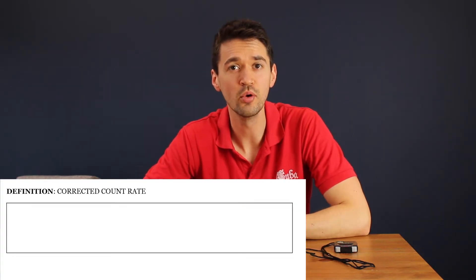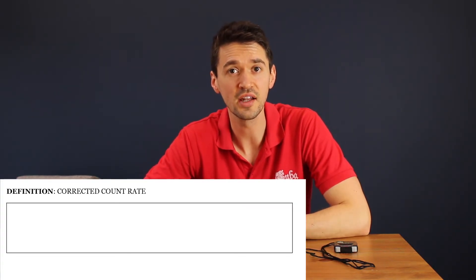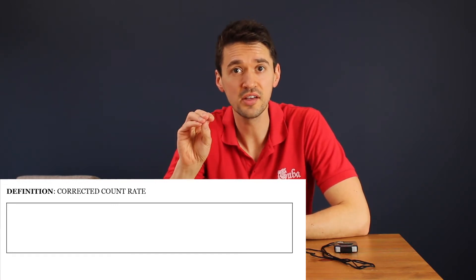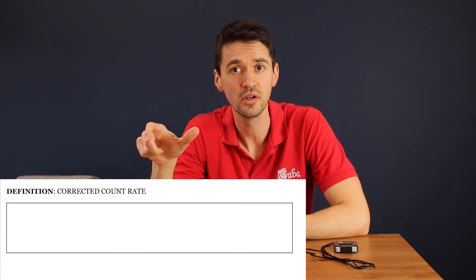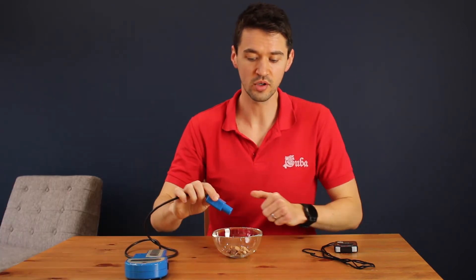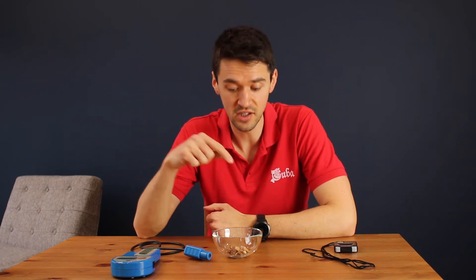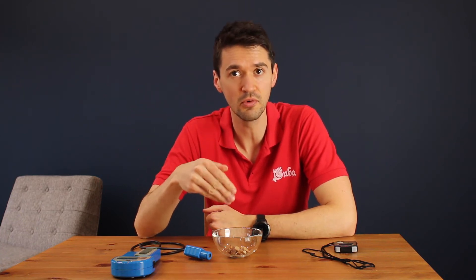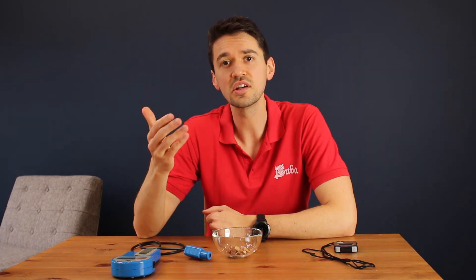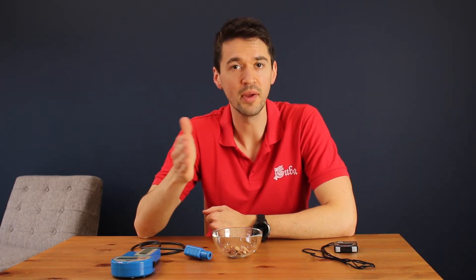The corrected count rate is an important thing you need to be able to calculate. The corrected count rate is the count rate from the isotope take away the background count. With these Brazil nuts: if they give a count of 120 you might think that's really radioactive, but take off the 95 background and we've only got 25 over five minutes — five per minute actually coming from the Brazil nuts. It's almost like a zero error: taking off the background count for any reading from a radioactive source.